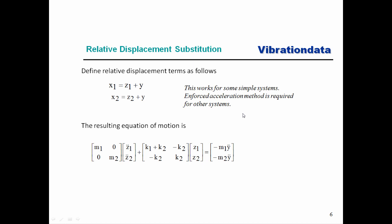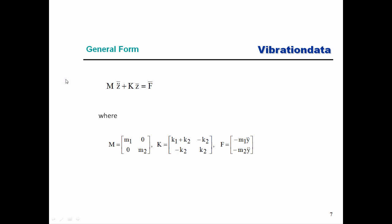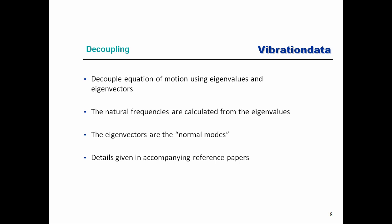Let's go through the uncoupling process using eigenvalues and eigenvectors. Natural frequencies will be calculated from the eigenvalues — I'll use eigenvalues and natural frequencies somewhat interchangeably. The eigenvectors are the normal modes, which are orthogonal mode shapes. The details for all these derivations are given in the reference papers on my website, but we'll go through the highlights here.